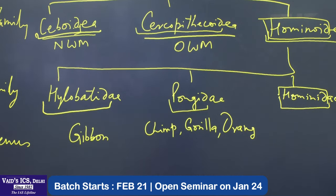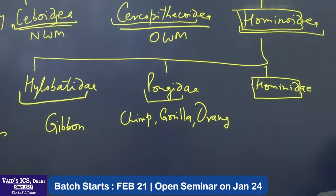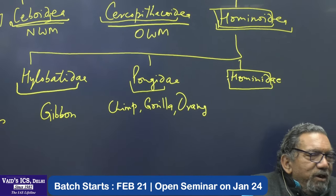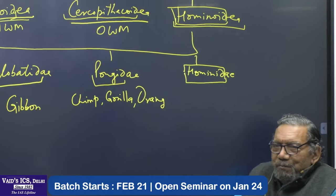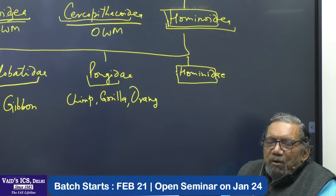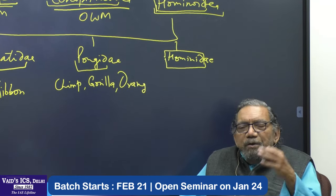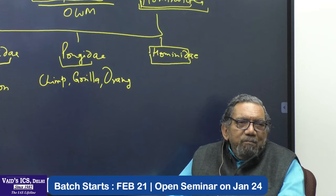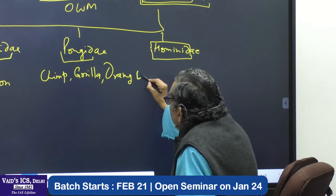Chimpanzee. Orang Utan means 'Man of the Forest'. If you put a hat on an Orang Utan and seat it on a chair, and see it from a distance, it will seem as if an old man is sitting. And these three — Gibbon, Chimp, Gorilla, and Orang — are the living apes.